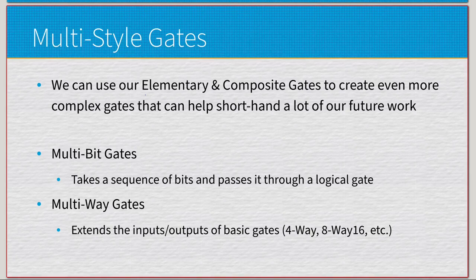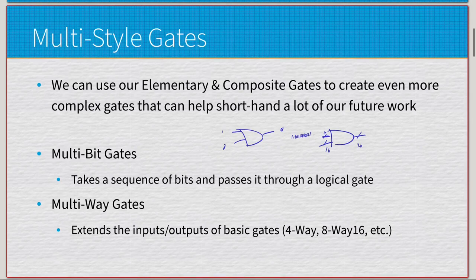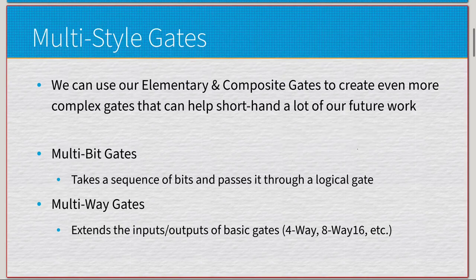Multi-bit is going to take a sequence of bits and pass them through a logical gate. Since we're creating a 16-bit computer, most of our data is going to be in the form of 16 bits. So instead of having an AND gate with one and zero making a zero, we'd have an AND16 — taking a 16-bit string along with another 16-bit string, AND-ing all of these together to produce another 16-bit output, instead of having to do it 16 individual times.